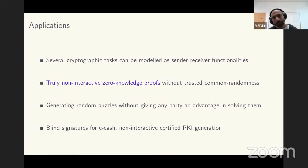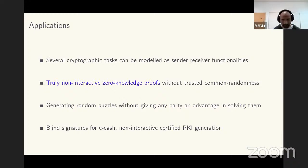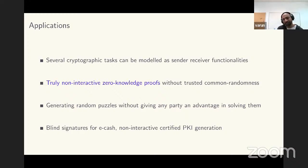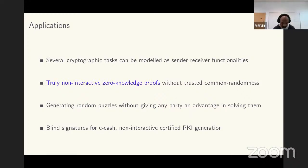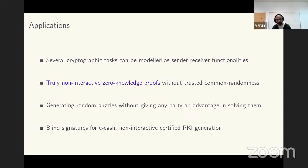Zero-knowledge proofs realized in this model are truly non-interactive in that they don't even use trusted common randomness. We can also use one-way secure computation to generate random puzzles which give no advantage to either the puzzle generator or solver, due to the security of the scheme. Other notable applications include realizing blind signatures with applications in e-cash, and realizing non-interactive certified PKI generation.